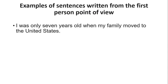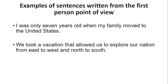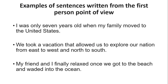Examples of sentences written from the first person point of view: 'I was only seven years old when my family moved to the United States' — here 'I' and 'my' are examples of first person. 'We took a vacation that allowed us to explore our nation from east to west and north to south' — 'we,' 'us,' and 'our' are examples of first person plural. 'My friend and I finally relaxed once we got to the beach' — 'my,' 'I,' and 'we' are all first person. When you use first person pronouns, you are using first person point of view.